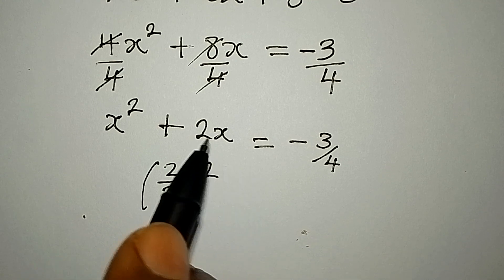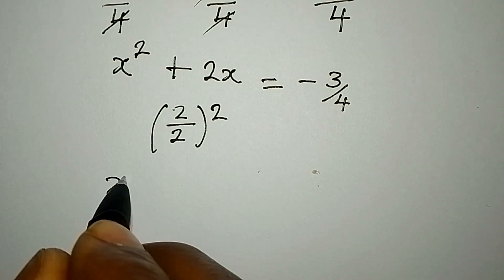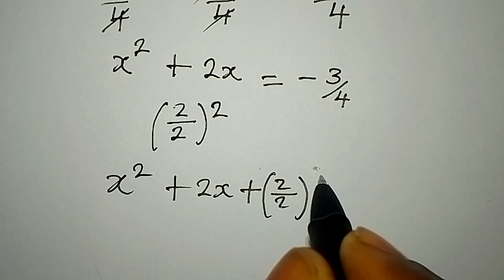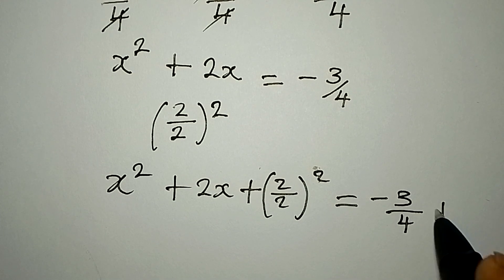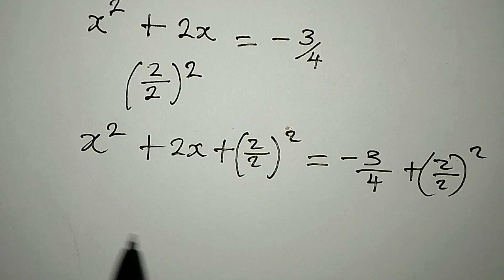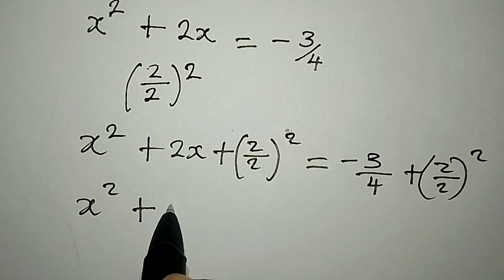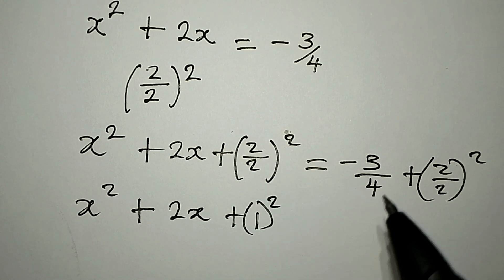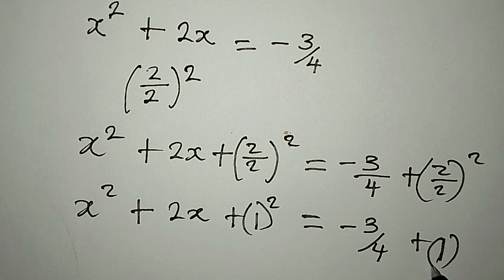So I'm going to add this to both sides. We're going to have x² + 2x + (2/2)² equal to negative 3 over 4 plus (2/2)². From here we have x² + 2x + 1², since 2 over 2 is 1, and this will be equal to negative 3 over 4 plus 1, that is 1².